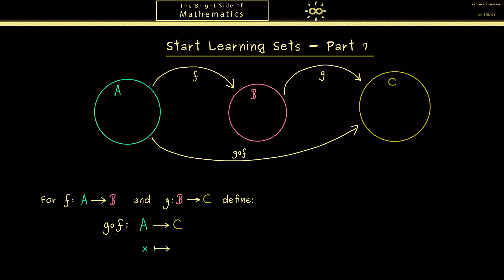The definition of this map is now given by take an X and put it first into F and then put the result into the map G. And this is what we call the composition from now on.